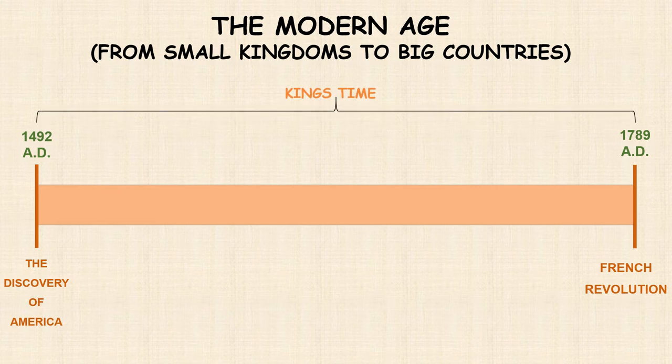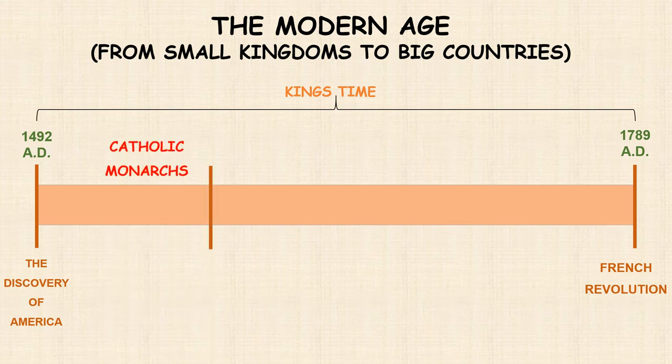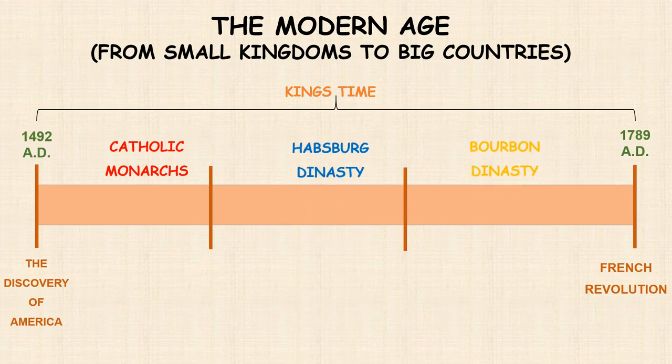Also, this age was a king's time. In Spain, there were three dynasties: the Catholic Monarchs, the Habsburg dynasty, and the Bourbon dynasty. Philip the Sixth, the current king of Spain, belongs to the Bourbon dynasty.